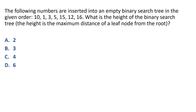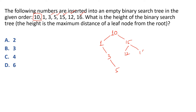Next question mein kaha gaya ki hamare paas ek empty binary search tree hai aur isme in keys ko insert kiya gaya hai — aapko batana hai ki BST ki height kitni hogi. Yaad rakhiye ki jab BST construct karte hain toh pahla node root node banta hai aur har ek insertion process root node ke through hi hoti hai. 10 root node ban gaya. 1 ko insert karne ke liye root se search kiya — 1, 10 se chota hai isliye left mein gaye. 3 ko insert karna hai: 10 se chota, 1 se bada, isliye 1 ke right mein insert kiya. 5 ko insert karna: 10 se chota, 1 se bada, 3 se bada, isliye 3 ke right mein. 15 root se bada isliye right pe. 12 root se bada, 15 se chota isliye left mein. 16 root se bada, 15 se bada isliye right mein insert kiya.